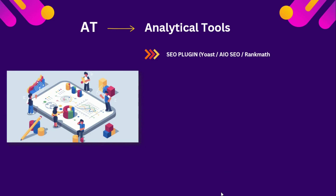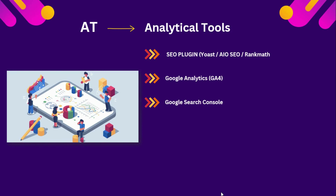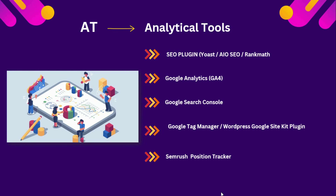For Analytical Tools, focus on an SEO plugin — there are three: Yoast, All-in-One SEO, and Rank Math; choose any one. Second, create a Google Analytics account and connect it to your website. Third, create a Google Search Console account to crawl your website after SEO. Fourth, use Google Tag Manager or install the WordPress Google Site Kit plugin. Fifth, create a free SEMrush account and add your website to track your Google ranking position.